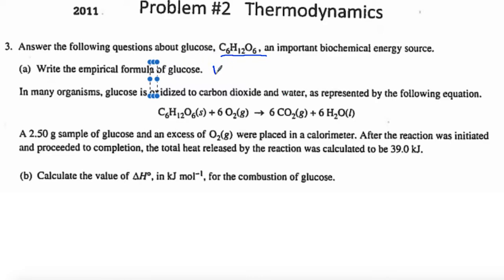Empirical formula is the lowest ratio of atoms. Sometimes we'll have to calculate that, but all they want you to do is look at it and say, what's the lowest ratio? You see everybody can be divided by six, so you get CH2O.